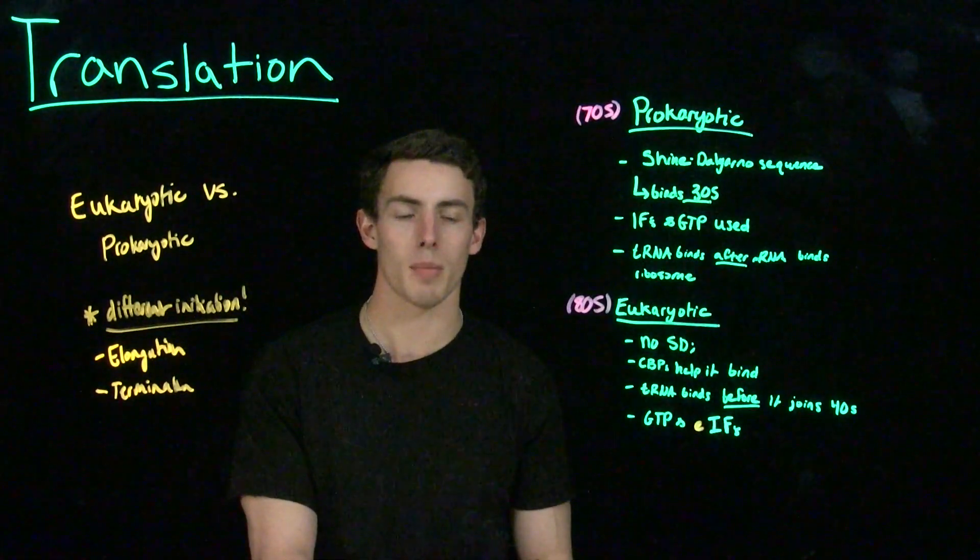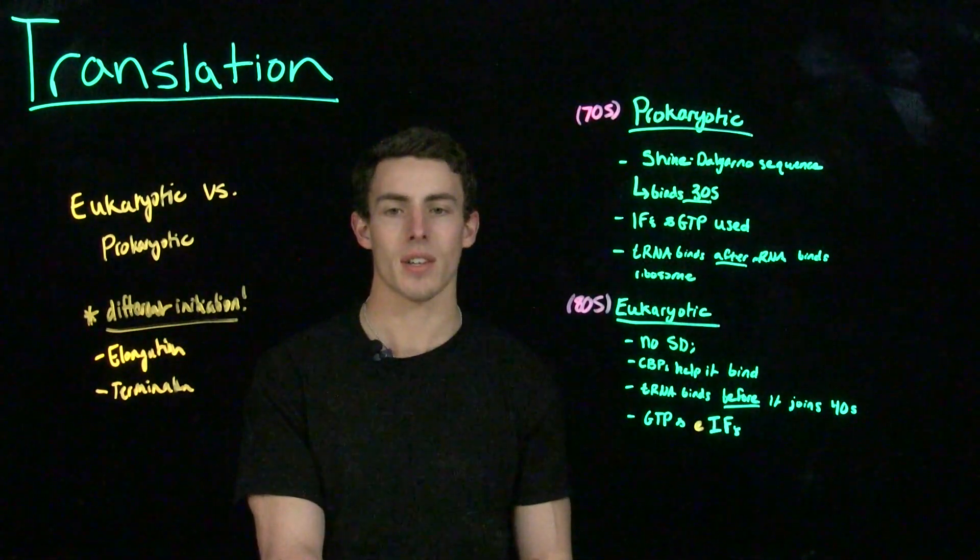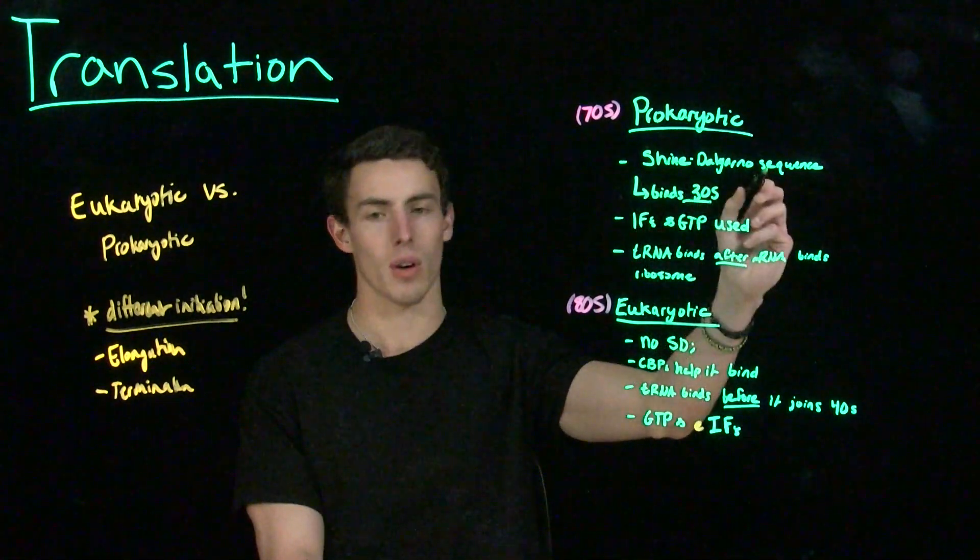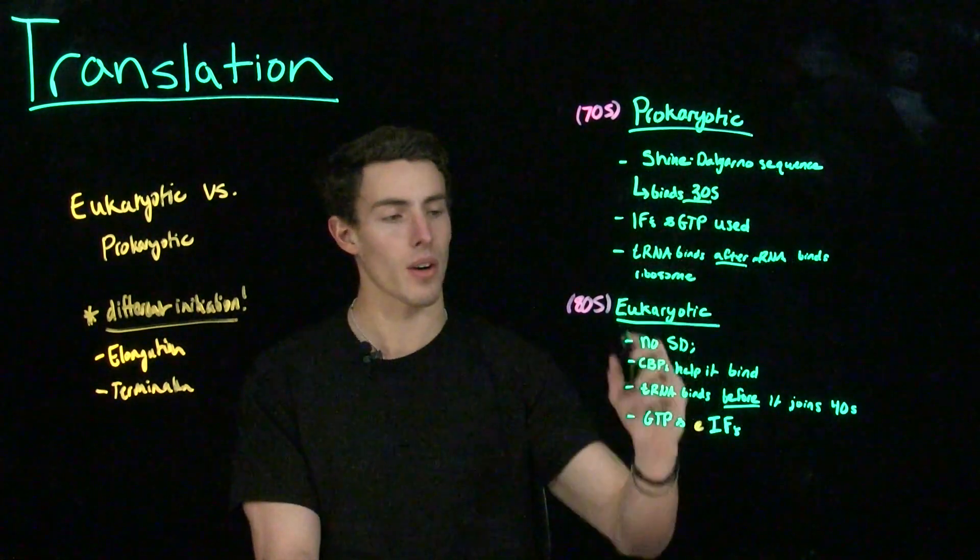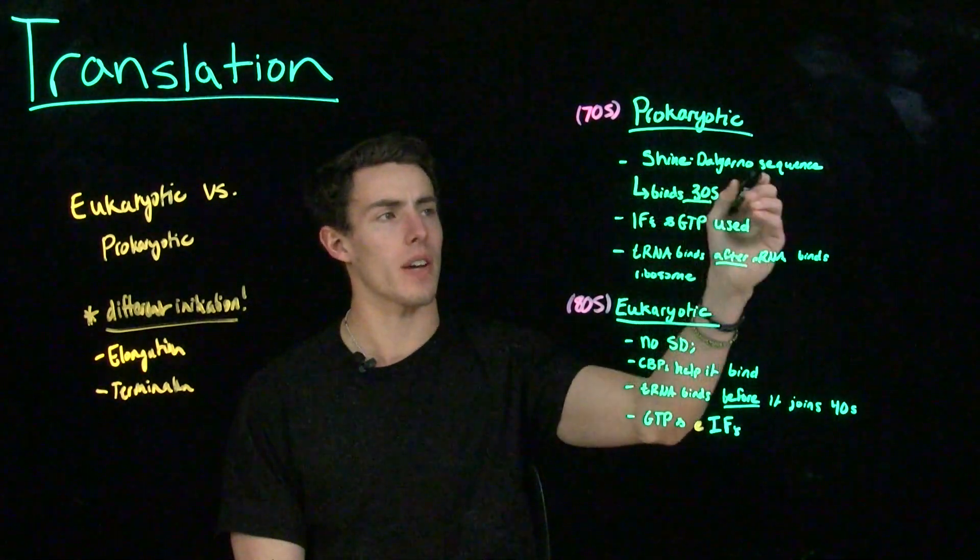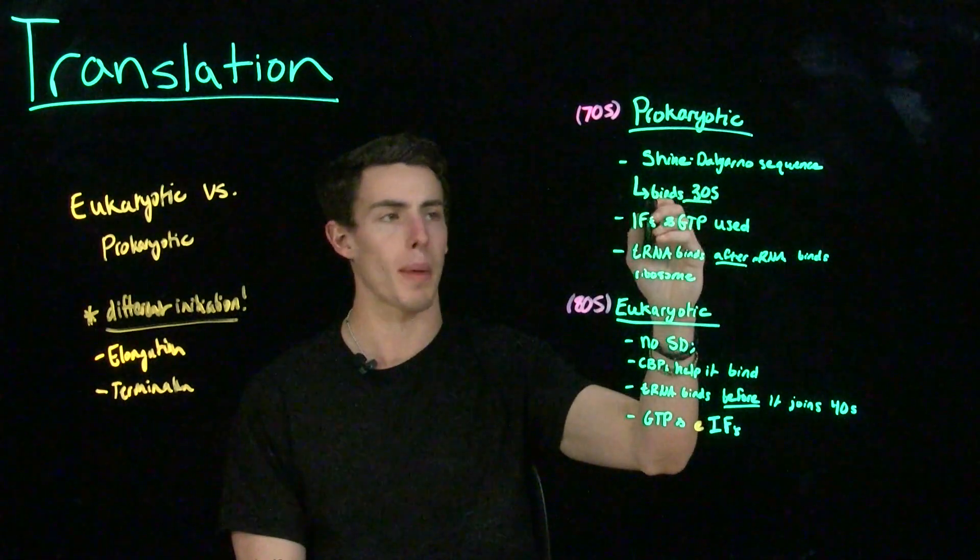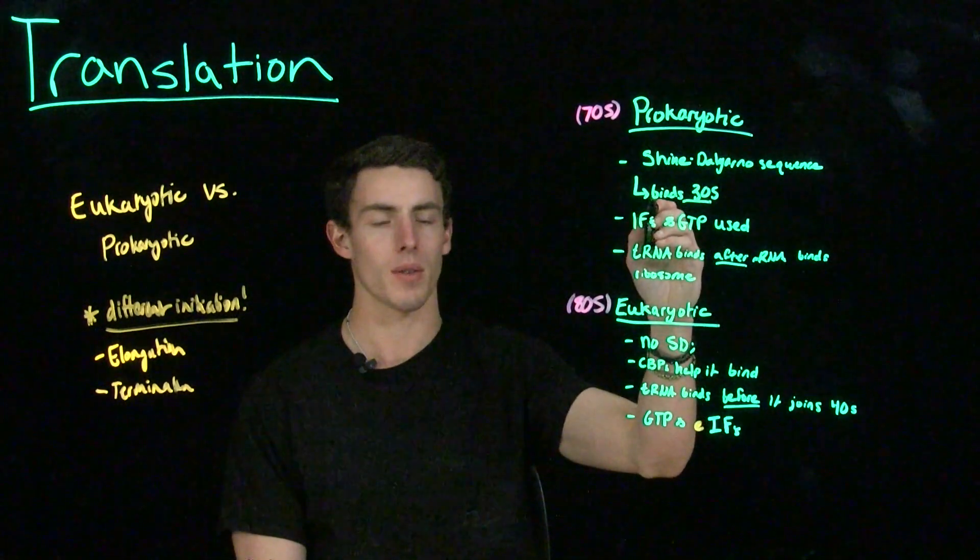So now let's compare eukaryotic and prokaryotic translation in initiation. In prokaryotic cells, we have a consensus sequence called the Shine-Delgarno sequence. However, in eukaryotic cells, we don't have this sequence. In prokaryotic cells, the Shine-Delgarno sequence acts as a particular tracker that allows it to bind to a specific binding site on the small subunit of the ribosome.